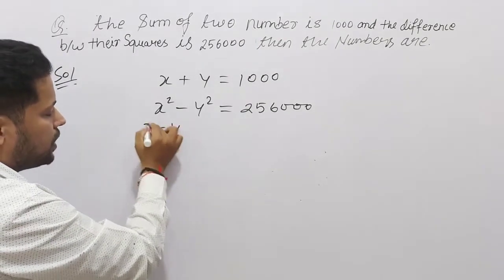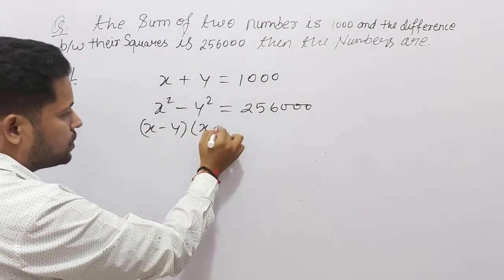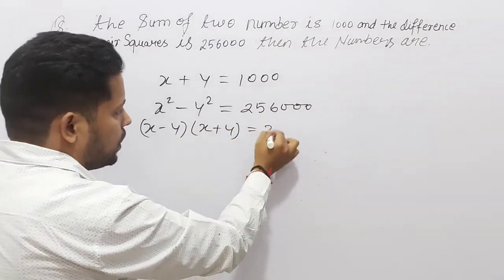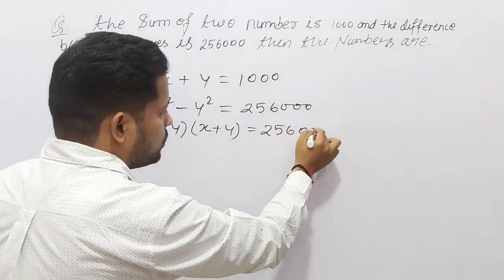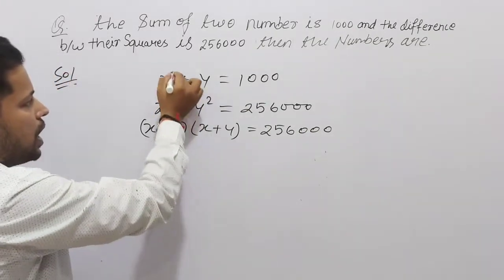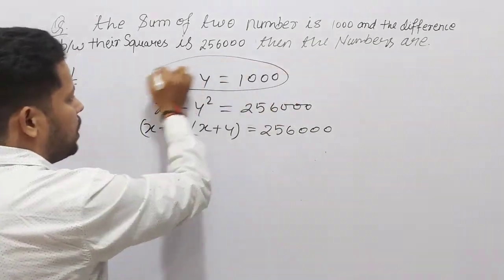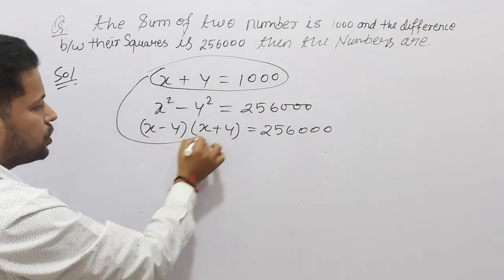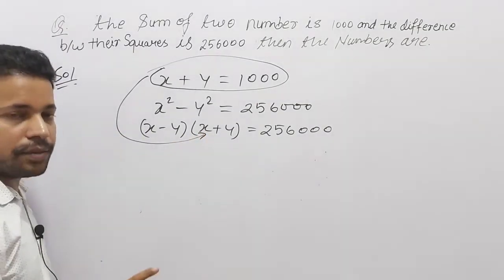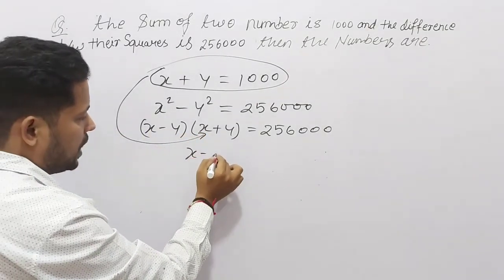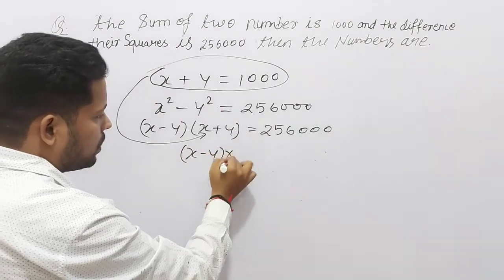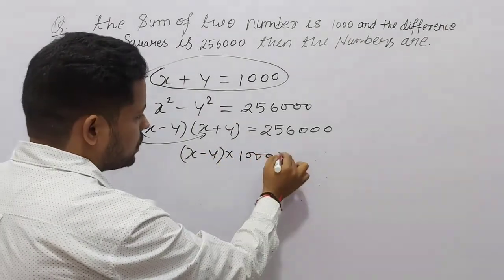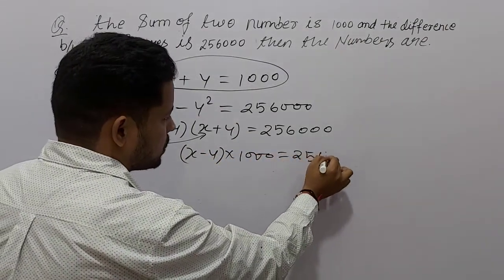So, x minus y हम लिख सकते हैं और x plus y. और यह हो जाएगा आपका 2,56,000. अब यहाँ पे x plus y की value given है. तो इसे हम put कर सकते हैं, x plus y की जगा पे. So, यहाँ पे हमें मिल जाएगा x minus y and into 1000 and equal to 2,56,000.